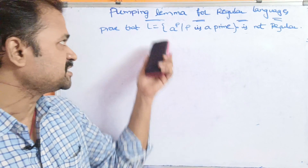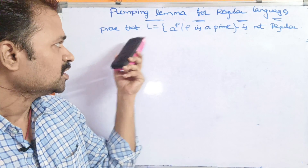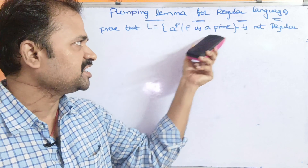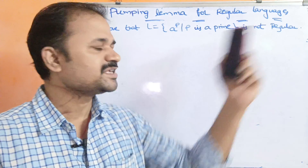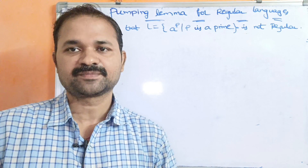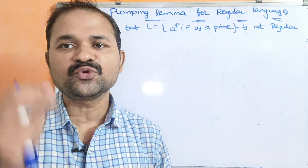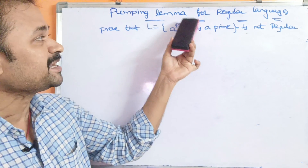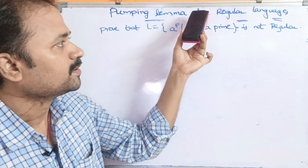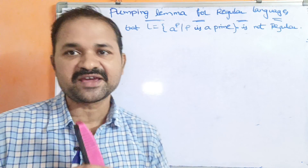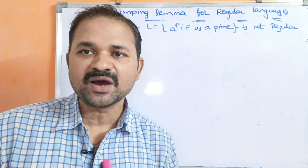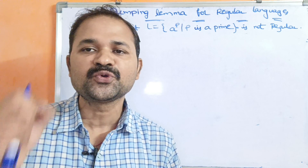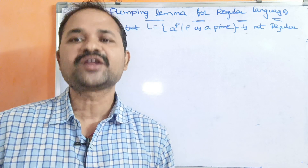Now let's see about this problem. Prove that L is equal to A power P such that P is a prime, is not regular. In order to prove a language as not regular, we use pumping lemma. Pumping lemma is mainly useful in order to prove a language as not regular.